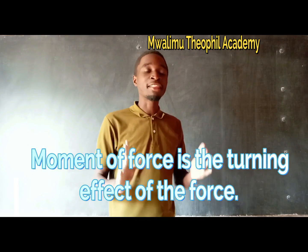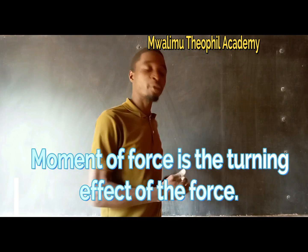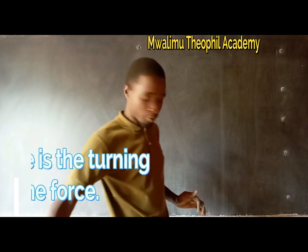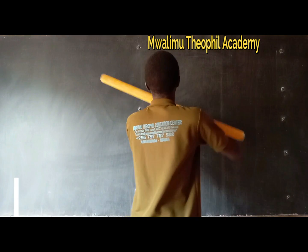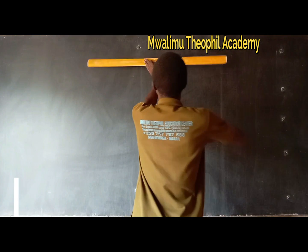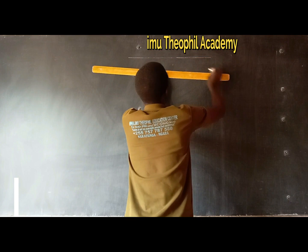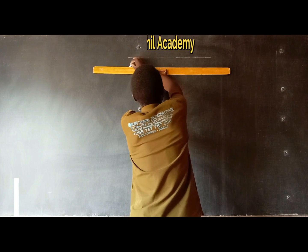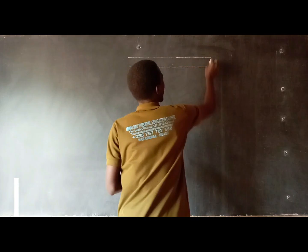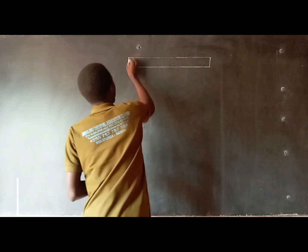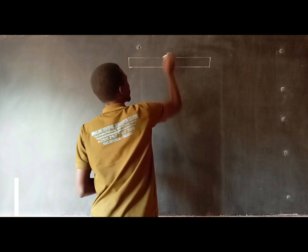Now, after this definition, let us elaborate it in a diagram. I am going to demonstrate what I have defined. Just take the diagram of a meter ruler — as you can see on the board here, we have a meter ruler. It has a center of gravity here — that is the midpoint of the ruler.